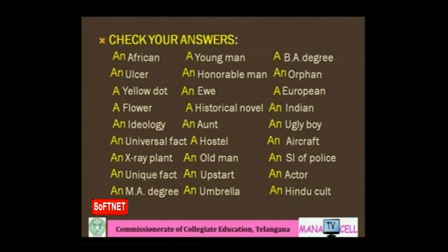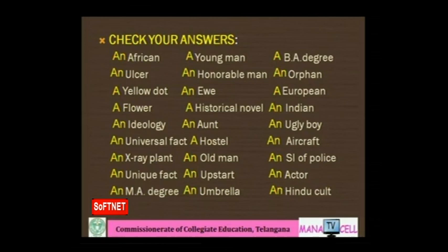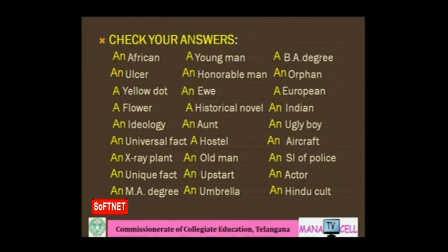Let us check our answers: an African (vowel sound), a young man, a BA degree, an ulcer, an honorable man, an orphan, a yellow dot, a European, a flower, a historical novel, an Indian, an ideology, an aunt, an ugly boy, a universal fact (correction — 'a' not 'an'), a hostel, an aircraft, an x-ray plant, an old man, an SIF police, a unique feature, an actor, an MA degree, an umbrella. And a Hindu cult — because 'H' is pronounced here.